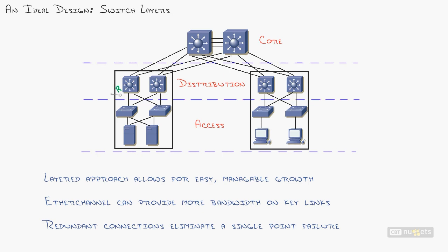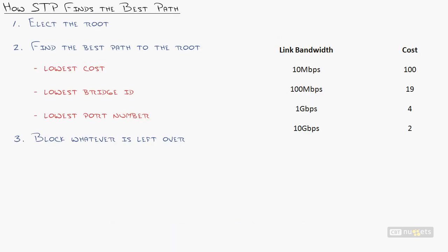How do switches find which links get blocked? This is my MVP slide for spanning tree — I wish someone had shown me this 14 years ago. There's so much documentation on spanning tree that the key points get lost. Here's how spanning tree finds which links get blocked — screenshot this, memorize these seriously. Step one: elect the root bridge.